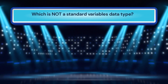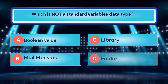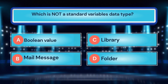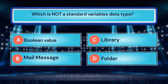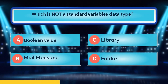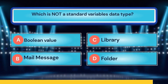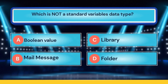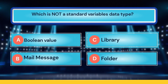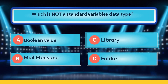Which is not a standard variable's data type? A. Boolean value. B. Mail message. C. Library. D. Folder. Time is up! The correct answer is C, library.